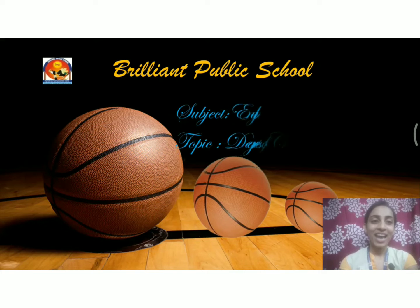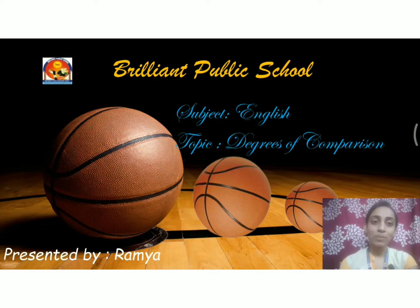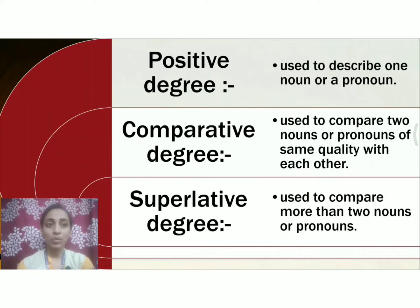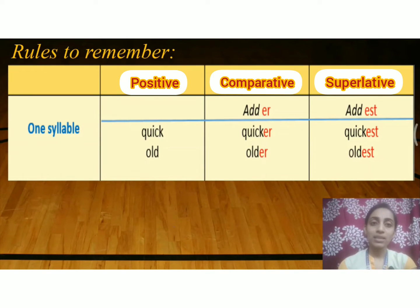Hey children, today I'm back with part 2 of degrees of comparison. In this video we shall learn the rules to be followed in degrees of comparison. Before that, let us recapitulate the three degrees: positive degree is used to describe one noun or pronoun, comparative degree is used to compare two nouns or pronouns of the same quality with each other, and superlative degree is used to compare more than two nouns or pronouns.